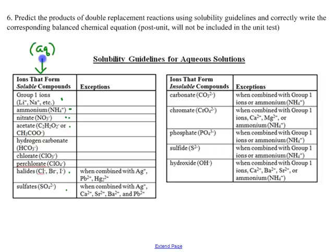However, there are some exceptions, and that's what this column is about. If you have a compound with a halide — a chloride, a bromide, an iodide — they're soluble, except when the cation is either silver, lead, or dimercury. So silver chloride, silver bromide, silver iodide would be insoluble.